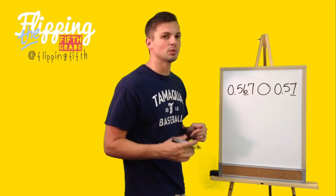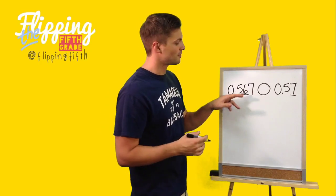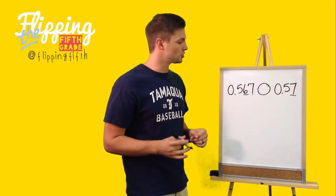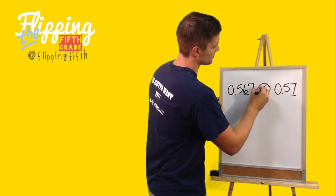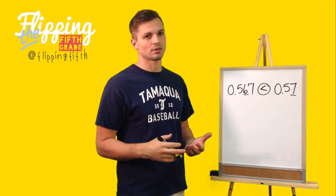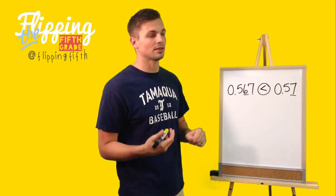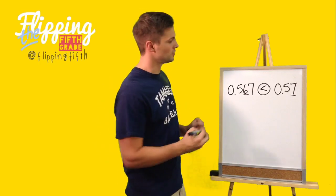Now, you may be thinking, well, what about the seven behind it? That does not matter because the first number that's different will tell you what order it should go into. Therefore, 57 hundredths is greater than 567 thousandths. That's a little trick you can do.